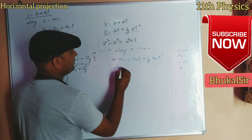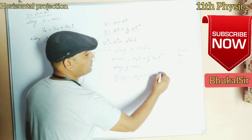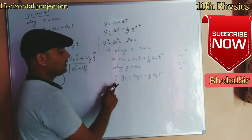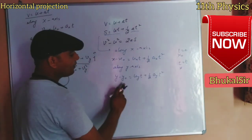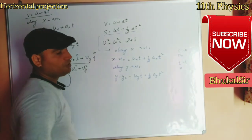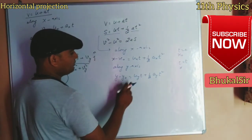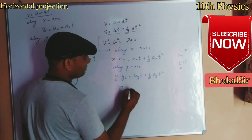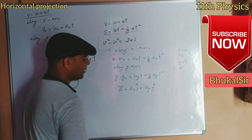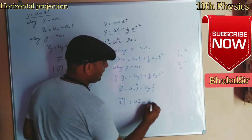Along the y-axis: y is the final position of the object at time t, and y₀ is the initial position at t = 0. Uy is the initial velocity along y-axis and Ay is the acceleration along y-axis. The acceleration vector can be written as A = Ax·î + Ay·ĵ, and its magnitude is √(Ax² + Ay²).